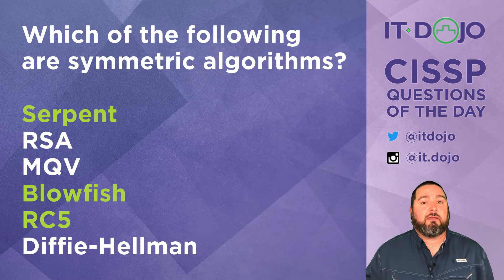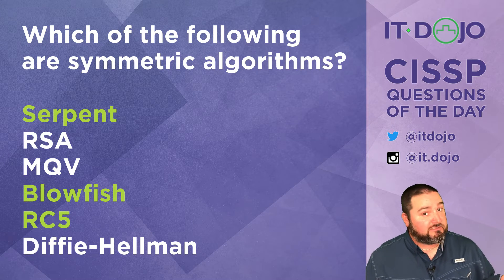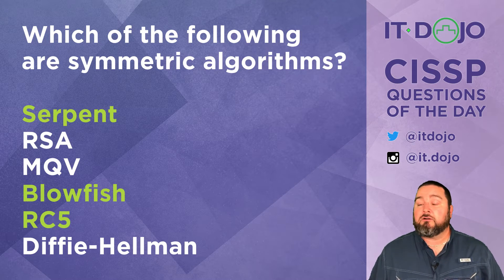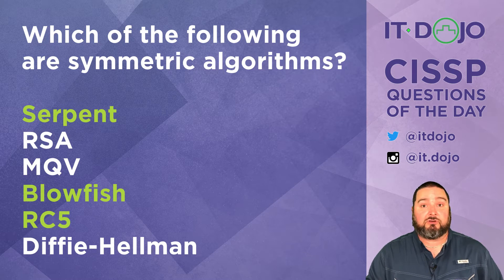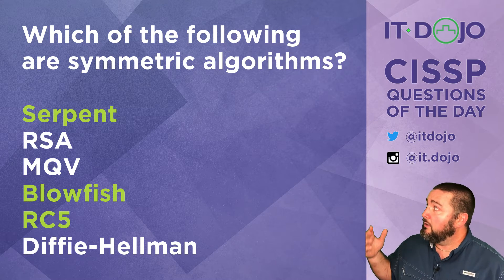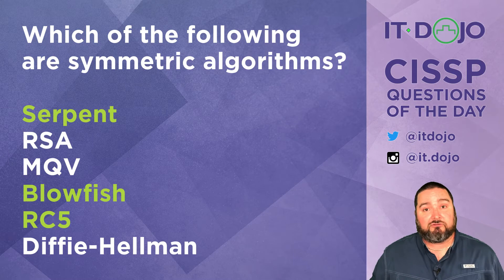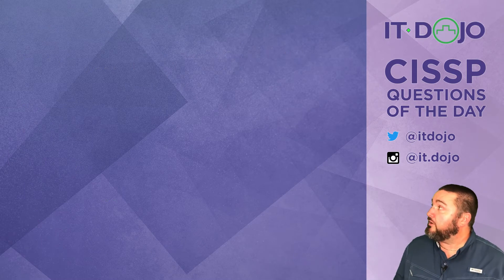It is absolutely worth your time for the CISSP exam to know which algorithms are symmetric and which are asymmetric by name. It's also worth knowing the basics of each — you don't have to get deep into the math, but you need to know things like block sizes and key lengths. A question might come at you nice and easy, asking you to pick which ones are symmetric or asymmetric.